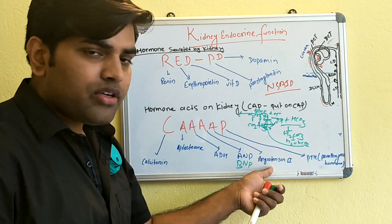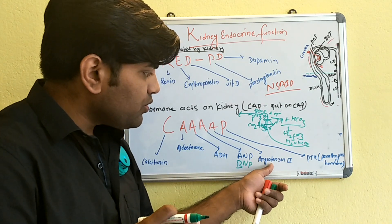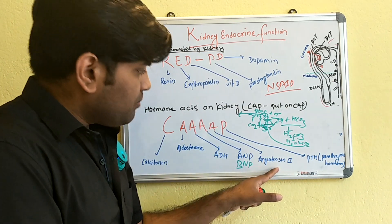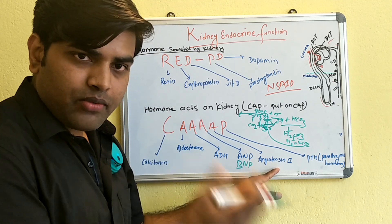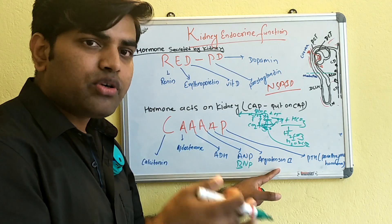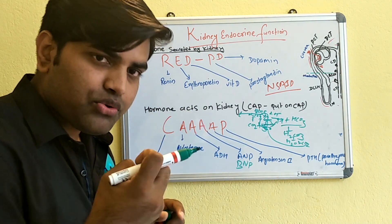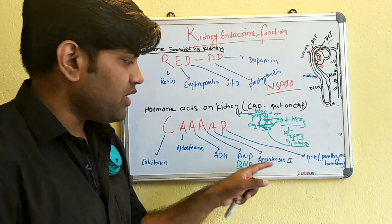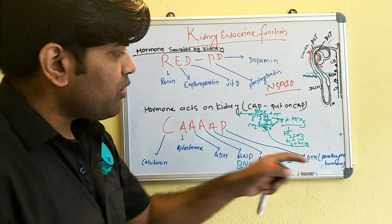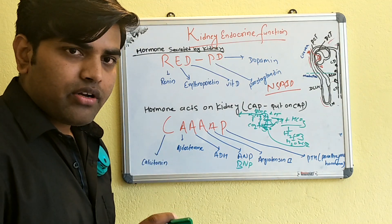In the distal collecting ducts and collecting tubules, angiotensin 2 stimulates the adrenal cortex — specifically the zona glomerulosa — to release mineralocorticoids (aldosterone). Aldosterone then conserves sodium and excretes potassium and hydrogen. This is the action of angiotensin 2 on the kidney.